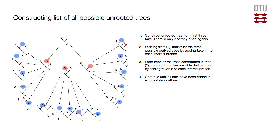First, constructing the list of all possible unrooted trees. It turns out that a very simple algorithm is to gradually build the tree one leaf at a time. If we start out by building a tree with only three species, there is just one way of doing that — we pick the first three species and construct a phylogenetic tree with a, b, and c sticking out. Starting with that tree, we can add the fourth species in three different places, because there are three branches on the initial tree. We could put species d on the b branch, the c branch, or the a branch, giving us three derived trees with four species.